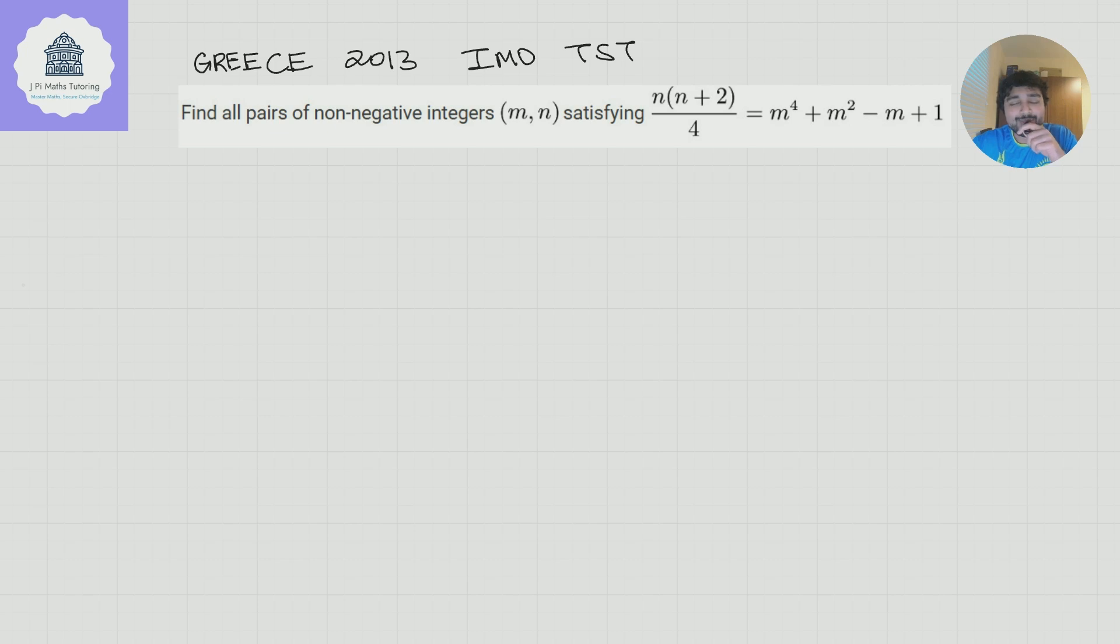Today we've got a problem from the Greece 2013 IMO team selection test. We want to find all pairs of non-negative integers m and n satisfying n(n+2)/4 = m^4 + m^2 - m + 1. Kind of crazy looking equation, but actually it's not too bad to deal with.